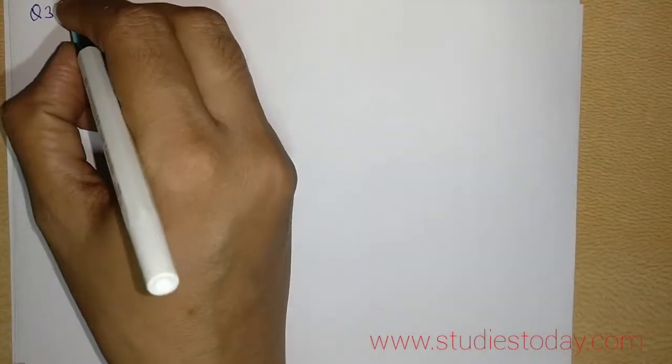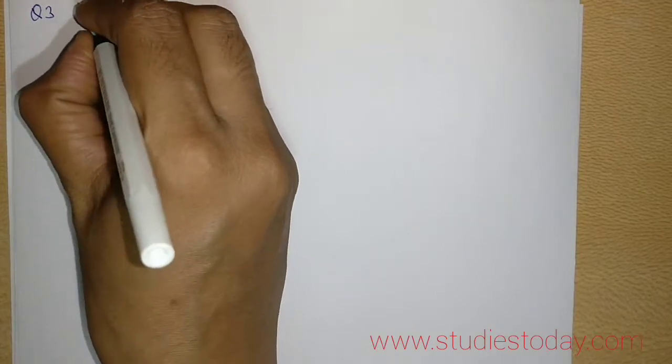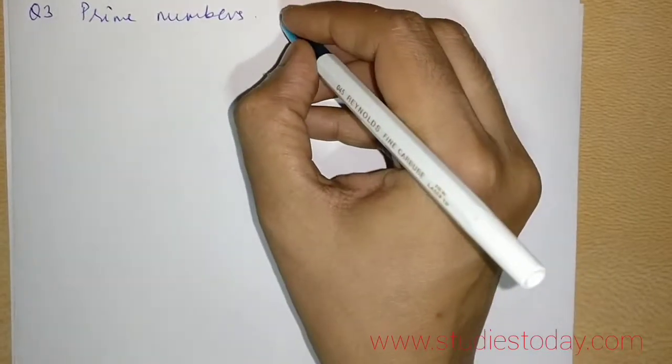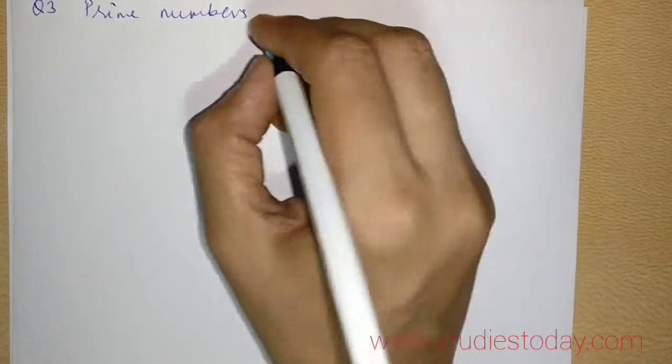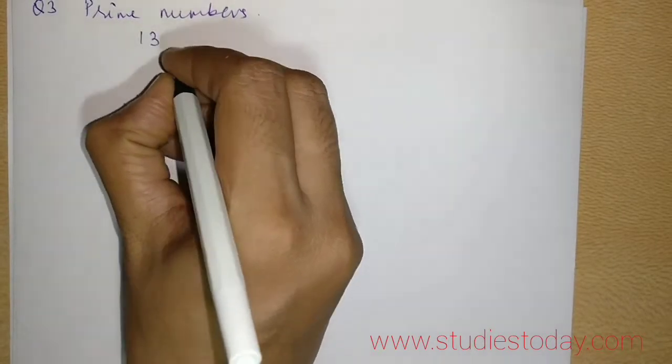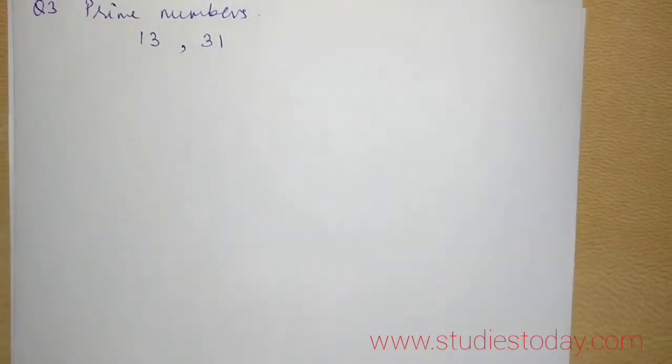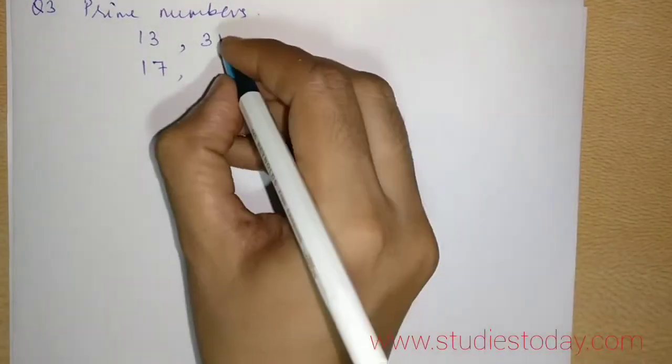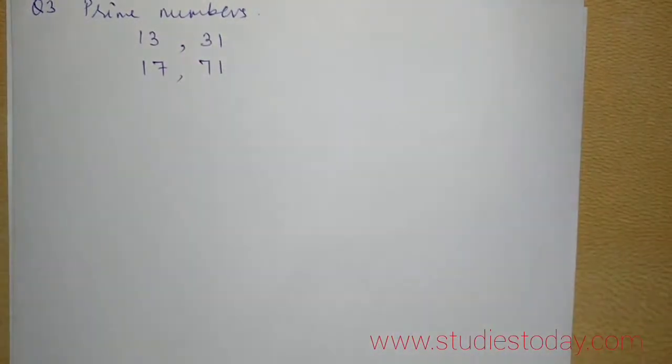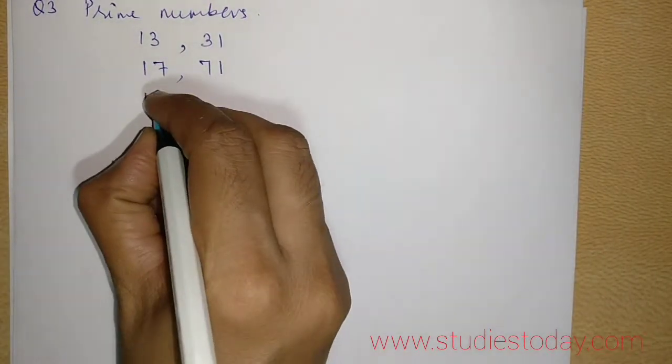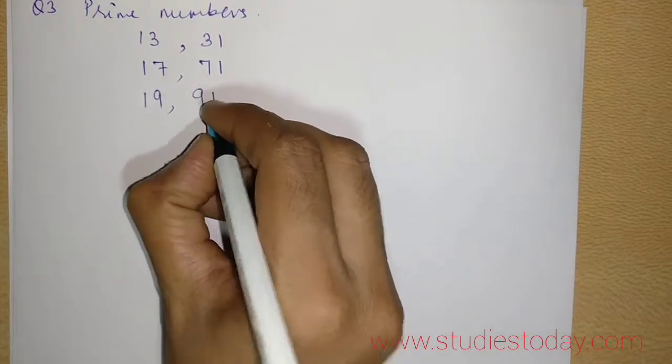So this is question number 3. I have to find the prime numbers so that when I reverse the digit I get the same one. The first was being done for us which was 13 and 31. The next which I take is 17. If I reverse the order of the digit I get 71 which is again prime. Then the next number which I choose is 19.